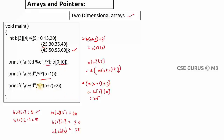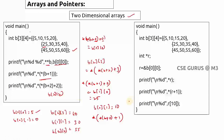`*(*(b + 2) + 2)` is indirectly equal to b[2][2], which is 55. What if I want first row, second column? That means b[0][1], which equals 10. So it can be represented as `*(*(b + 0) + 1)`. These are the pointer representations for accessing 2D array elements.